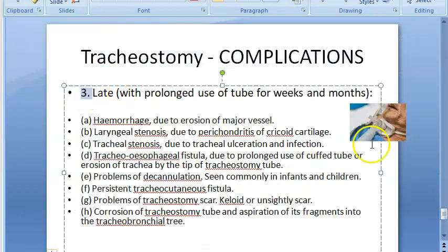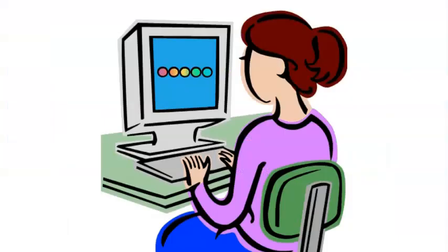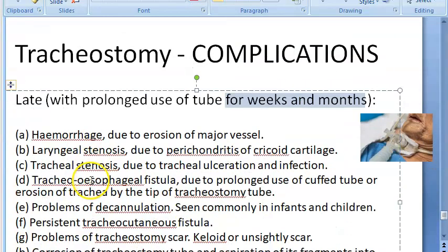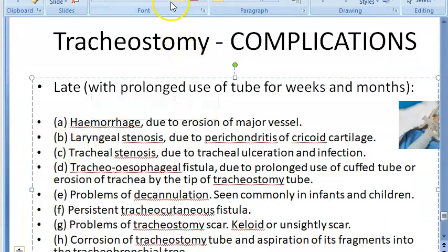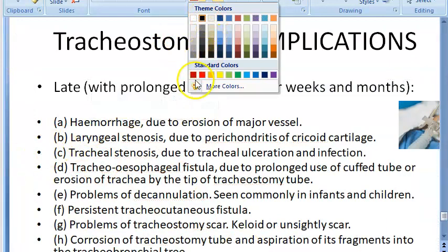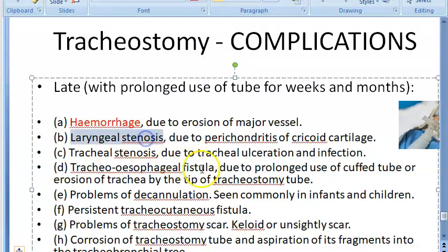Now for the late complications — those arising from prolonged use of the tube for weeks or months. Hemorrhage can occur again, this time due to erosion of a major vessel.